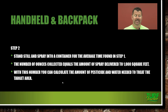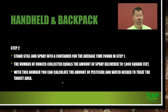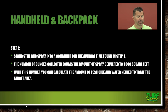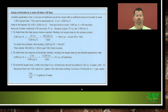Step 2: stand still and spray into a container for the average time found in step one. The number of ounces collected equals the amount of spray delivered to a 1,000-square-foot block. With this number, you can calculate the amount of pesticide and water needed to treat the target area.